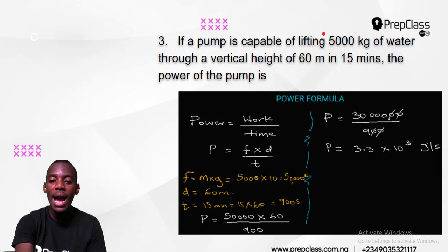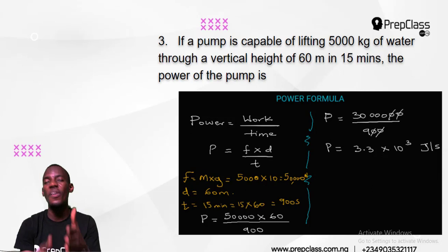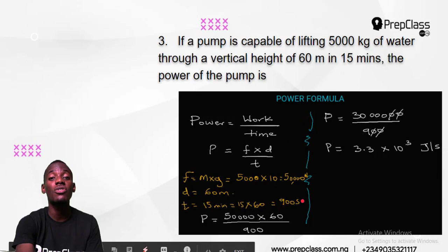The time is in minutes — and any time given in minutes in physics is a trap. Time is not measured in minutes in science; it must be changed into seconds. So 15 minutes becomes 15 times 60, which is 900 seconds. Now plug in all the parameters: power equals force times distance over time — 50,000 times 60, divided by 900 seconds.